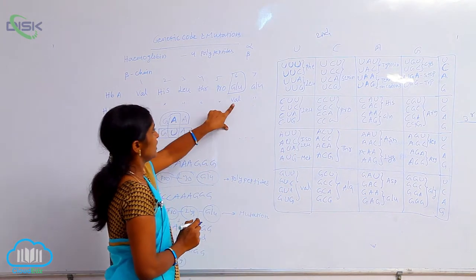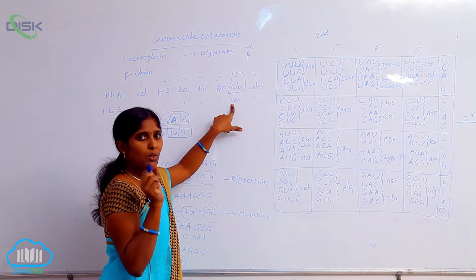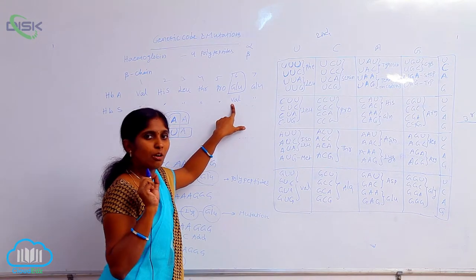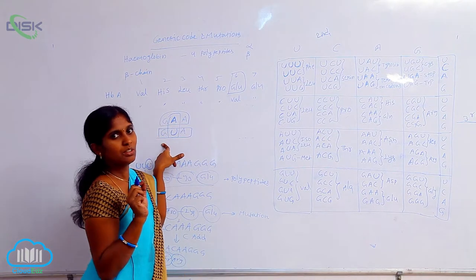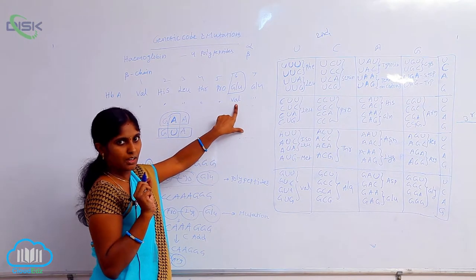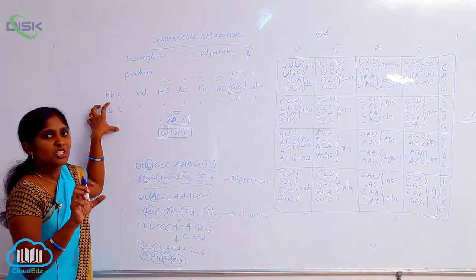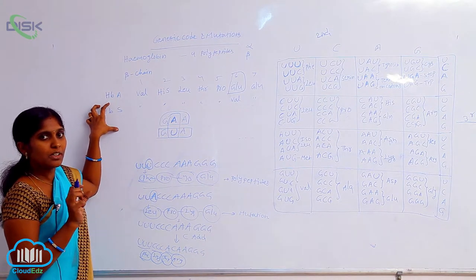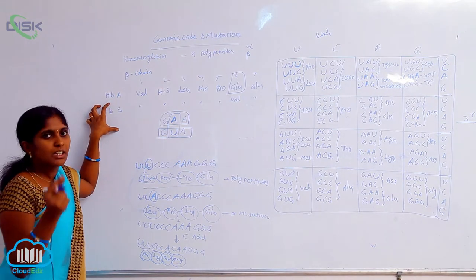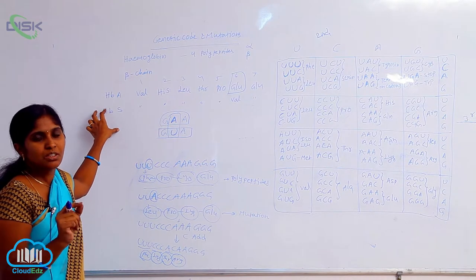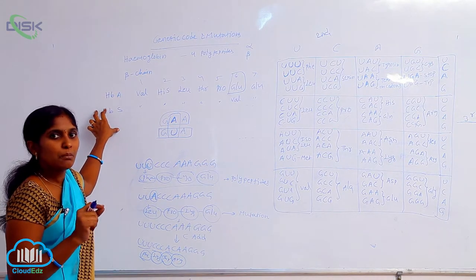It means the valine is changed. Only one single base pair alteration can lead to the identification of amino acid valine. It means the polypeptide chain is changed, which leads to phenotypic expression instead of the normal one.